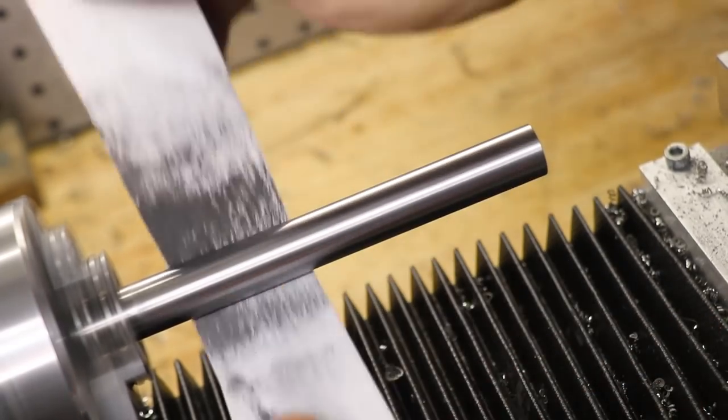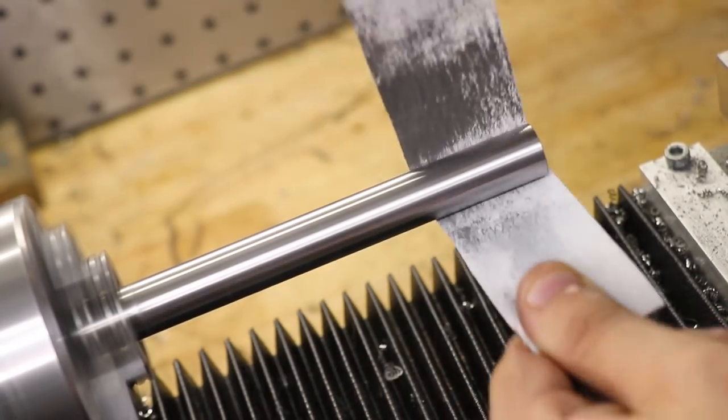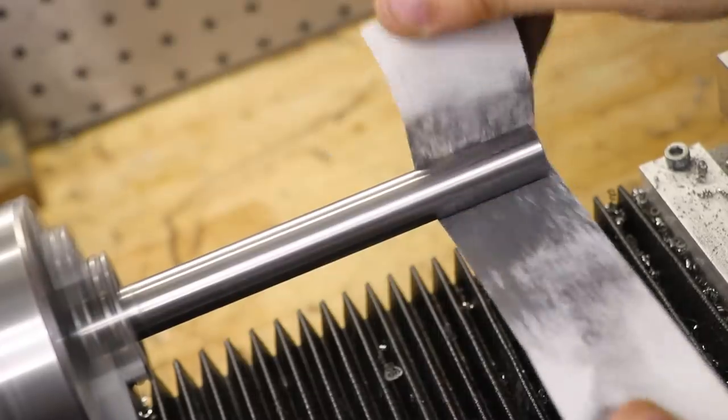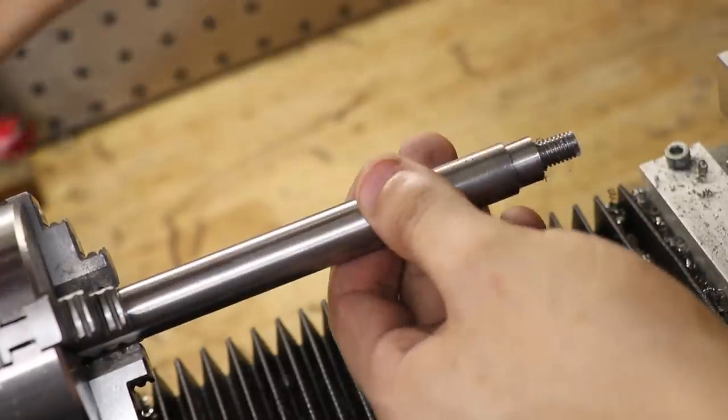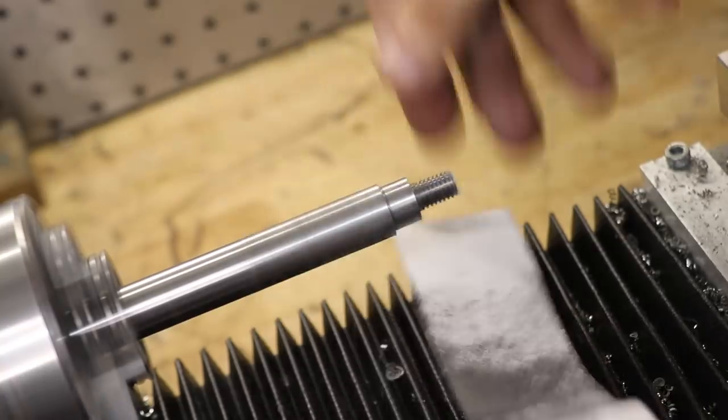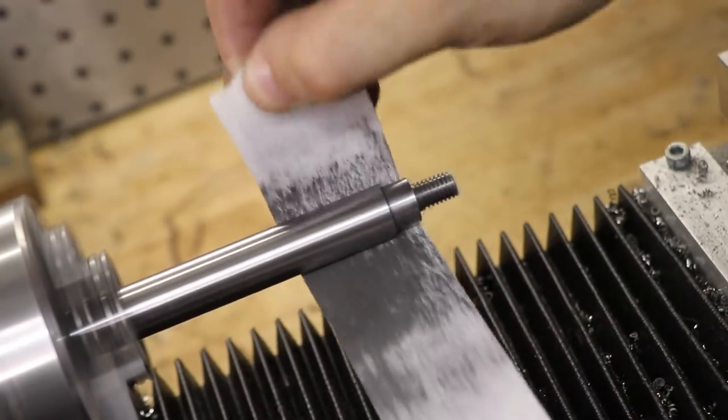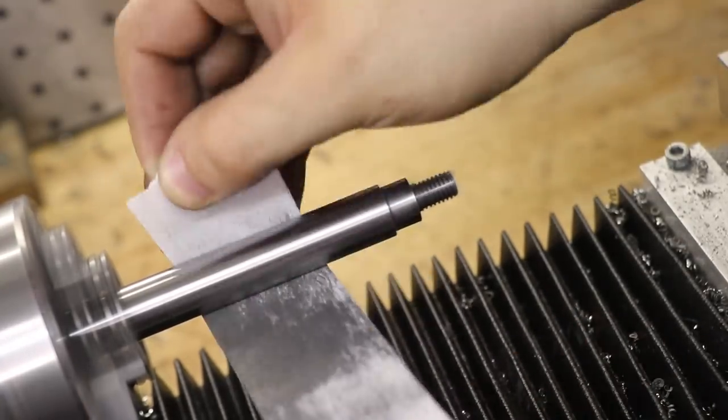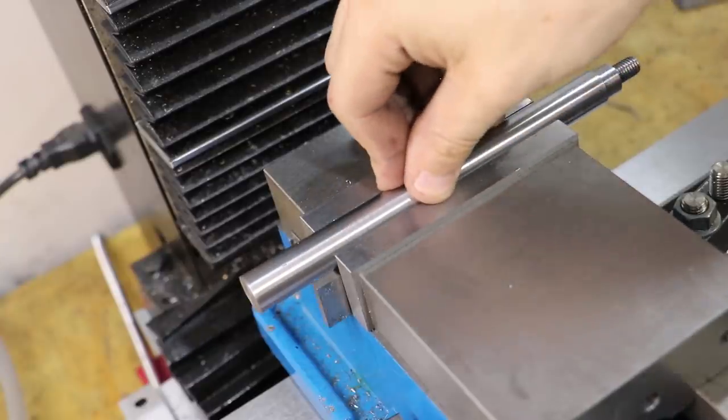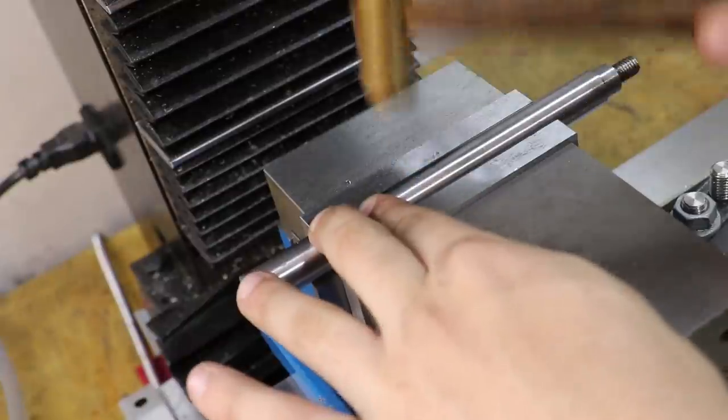And whilst I'm at the lathe, I'll also clean up the surface finish. The final thing I need to do is cut a slot down the middle of the rod.